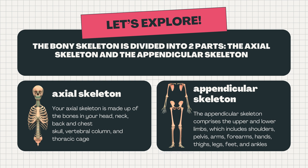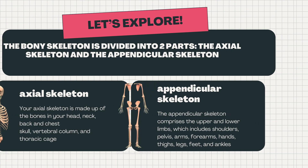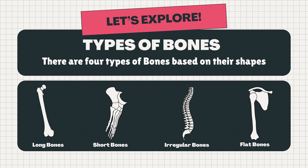The appendicular skeleton comprises the upper and lower limbs, which includes shoulders, pelvis, arms, forearms, hands, thighs, legs, feet, and ankles.